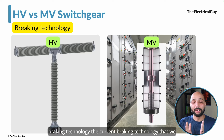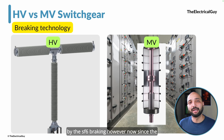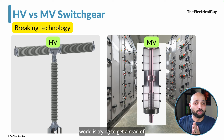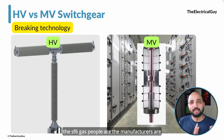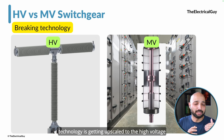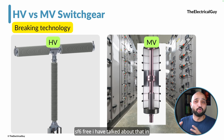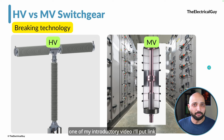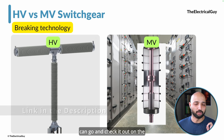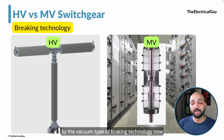Now let's talk about the breaking technology. In the high voltage industry it is mostly dominated by SF6 breaking. However, since the world is trying to get rid of SF6 gas, manufacturers are coming up with different technologies, and vacuum technology is being upscaled to high voltage as well. On the other hand, the medium voltage industry is dominated by vacuum type breaking technology.